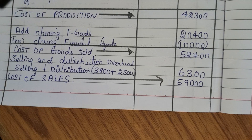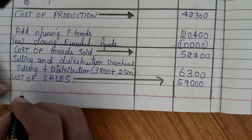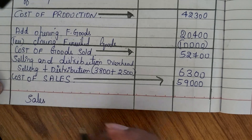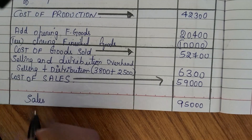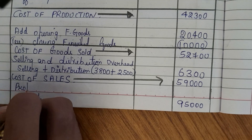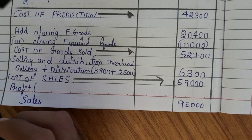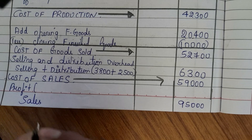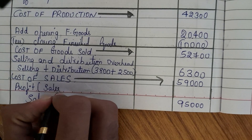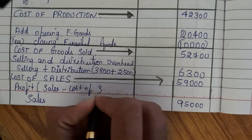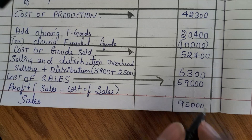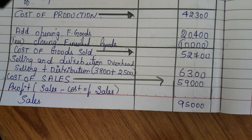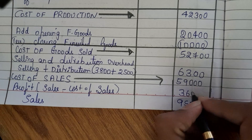The cost of sales is 59,000. In the question sales is given as 95,000. The formula for profit is sales minus cost of sales: 95,000 minus 59,000 gives us a profit of 36,000. This completes the first part of the question.